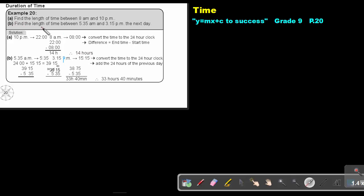Number B: Find the length of time between 5:35am and 3:15pm the next day. Again, convert it to the 24 hour clock. So if it's am, it stays the same. If it's pm, I add 12. So 12 plus 3 will be 15.